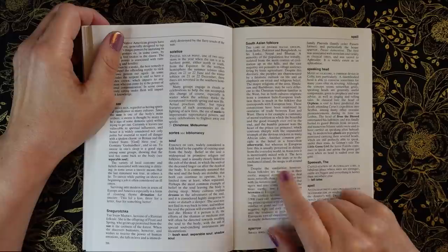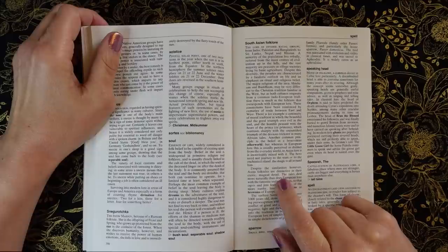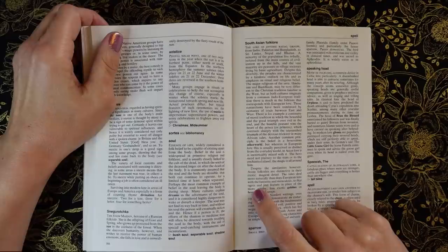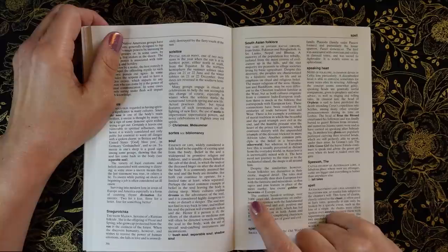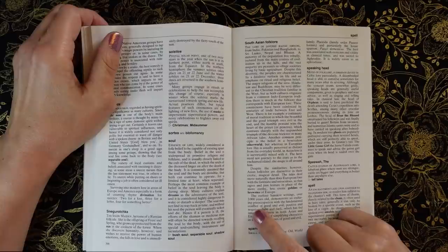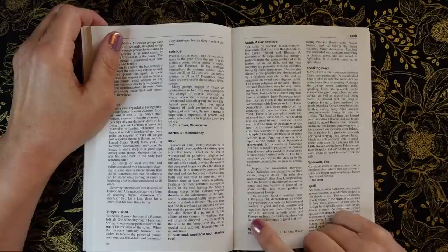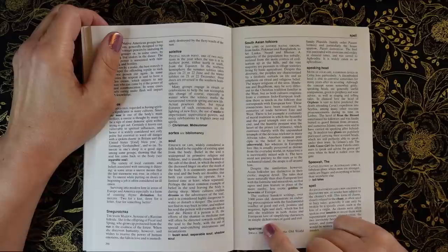Despite the similarities, Asian folk tales are distinctive in their exotic, magical detail. The tales deal more naturally than does European lore with the fantastic and miraculous, so that ogres and djinn feature in place of the more earthly, less exotic goblins or brownies of Europe. The earliest Sanskrit writings, over 3,000 years old, demonstrate an enduring preoccupation with the fundamental conflict of good and evil, positive and negative, light and dark, which are spun into the tradition in both Asian and European lore of simplifying characters in simple dichotomies of good and evil.